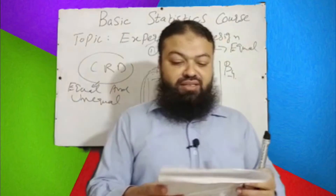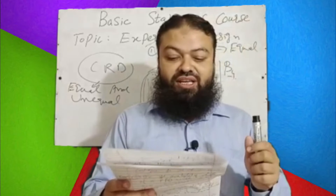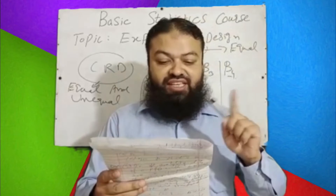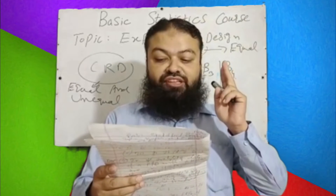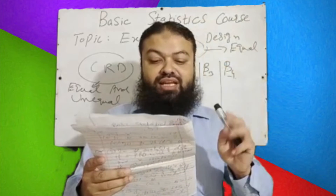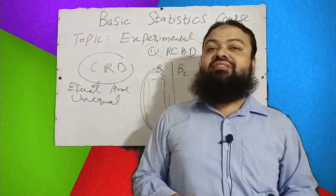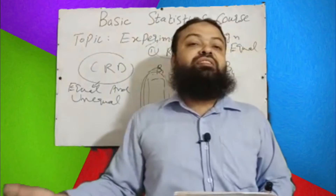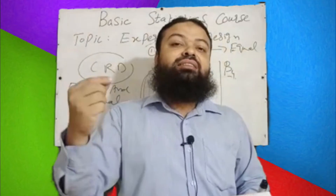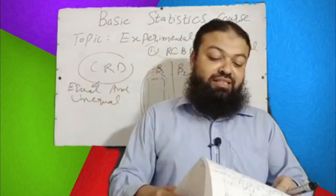Question number five: RCBD is not suitable for — a) smaller number of treatments (incorrect); b) smaller experimental units (incorrect); c) field experiment (incorrect); d) large number of treatments. Whenever we have a large number of treatments whose effect is to be determined, RCBD is not suitable. Please keep in mind.